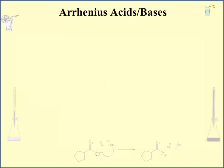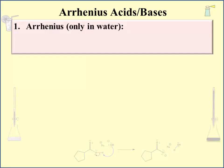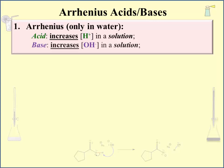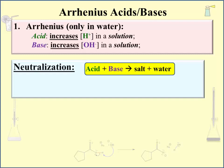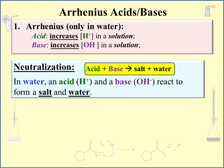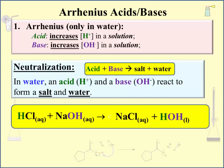Much of this lecture involves aqueous solutions. Arrhenius acids and bases take place in water. An Arrhenius acid increases the hydrogen ion concentration in a solution. An Arrhenius base increases the hydroxide concentration in a solution. A defining feature of Arrhenius acids and bases is a neutralization reaction. In water, an acid — a hydrogen ion donor — and a base — a hydroxide ion donor — react to form a salt and water. An example is aqueous hydrochloric acid plus aqueous sodium hydroxide producing aqueous sodium chloride and water.